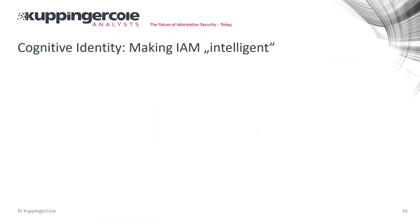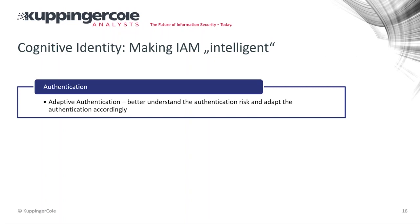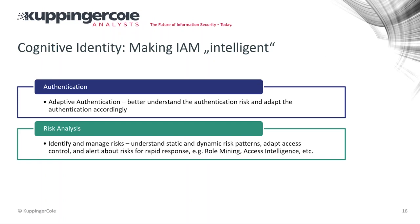From my perspective there are several fields where we can use cognitive identity to make IAM more intelligent. There's adaptive authentication — understanding authentication risk adapted to context. There's risk analysis, which has huge potential: identifying, managing, and dynamically setting risk patterns — some static because there are too many entitlements or wrong combinations, some dynamic depending on context — to adapt access control, alert about risks, and enable rapid response when an attack is detected. Role mining, access intelligence, and access governance can all benefit.